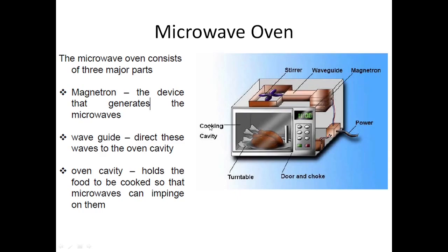The oven cavity is where food items are placed to be cooked. A platform called the turn table rotates inside. The door has a choke mechanism: as soon as the door is opened, power supply to the magnetron is immediately cut off to prevent microwaves from escaping into the user's space, which could cause severe damage to body parts. A proximity switch prevents power from reaching the magnetron when the door is open.